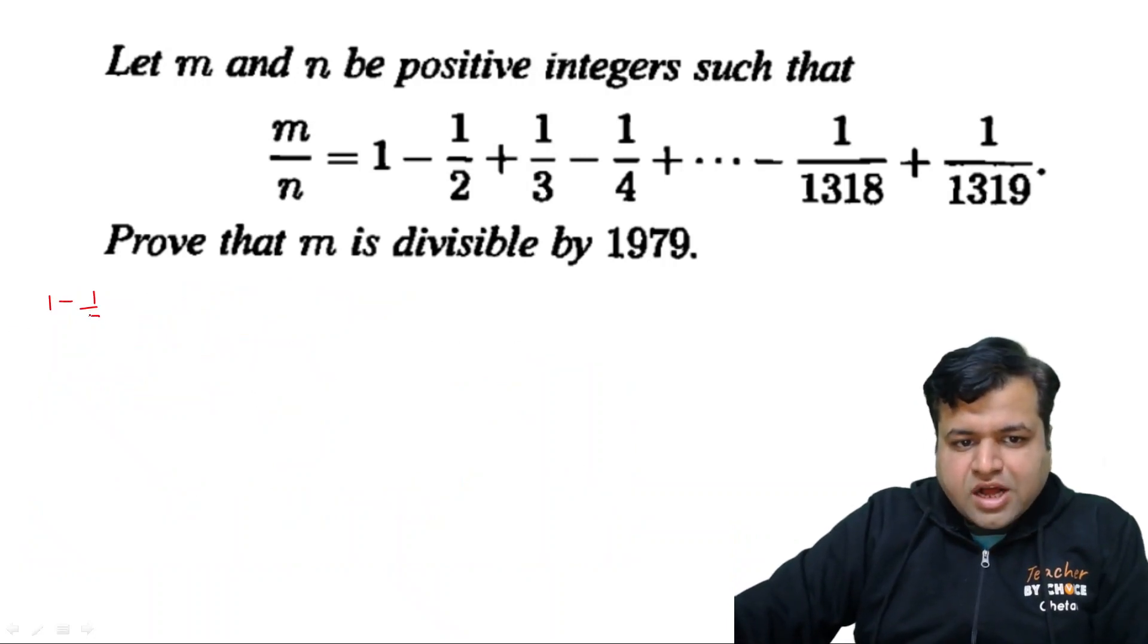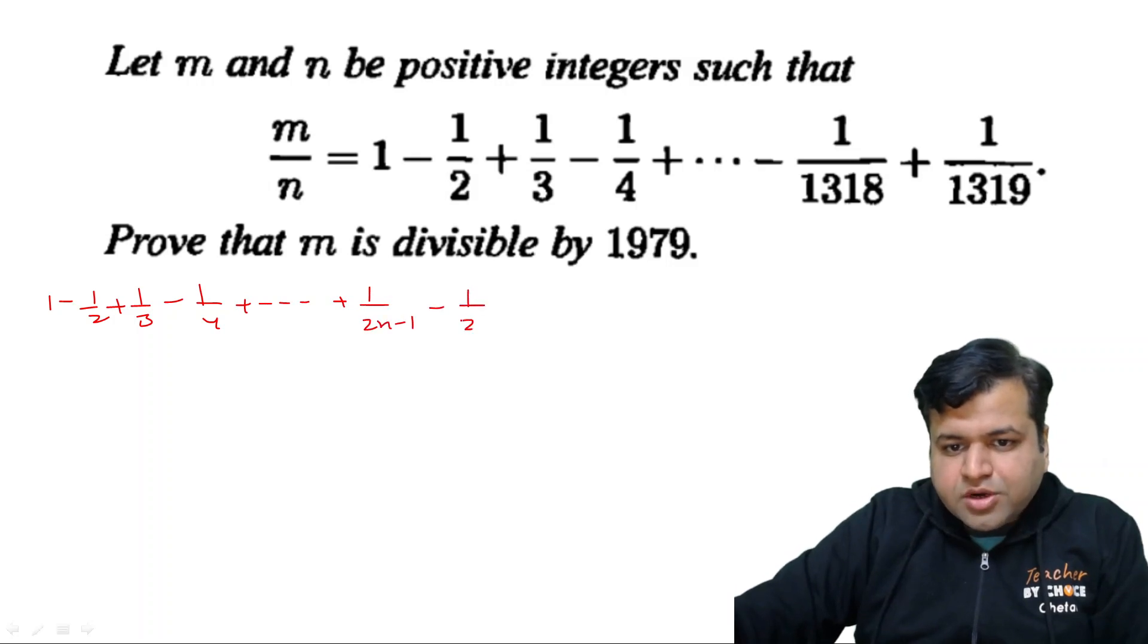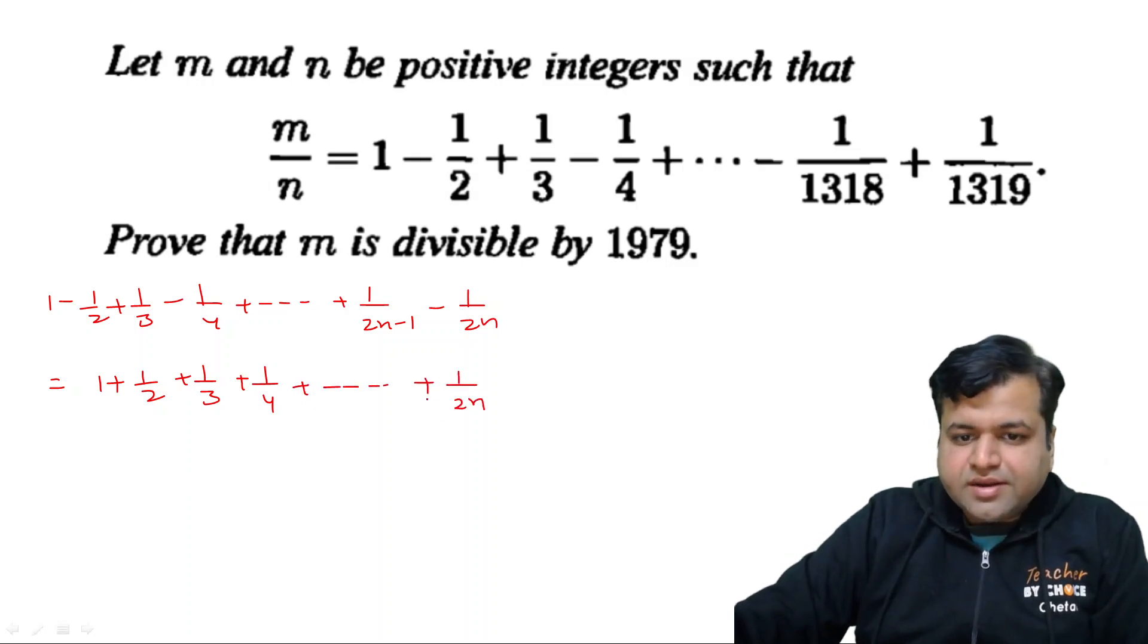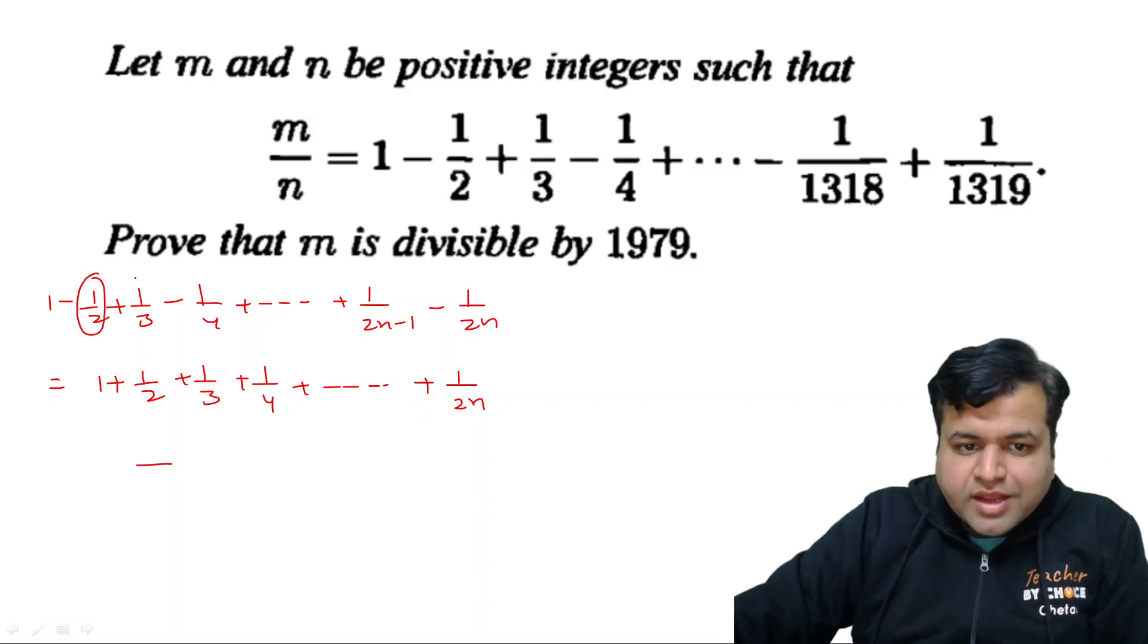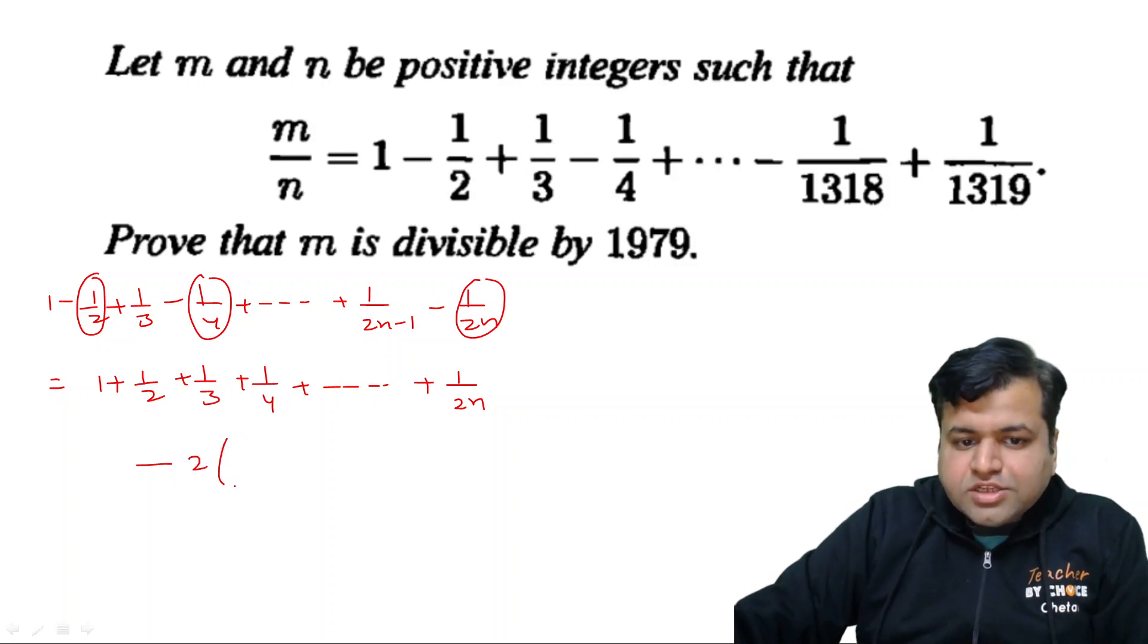So 1 minus half plus 1 by 3 minus 1 by 4 and so on till, let's say plus 1 upon 2n minus 1, then minus 1 upon 2n. So what we are doing, we are just adding half and 1 by 3 was already there. Now just add 1 by 4 and so on. And we have added 1 by 2n. And already minus, it was minus half, it was minus 1 by 4 and it was minus 1 by 2. So we need to subtract twice of what? 1 by 2 plus 1 by 4 plus 1 by 6 plus and so on till 1 by 2n. This is what we need to subtract.